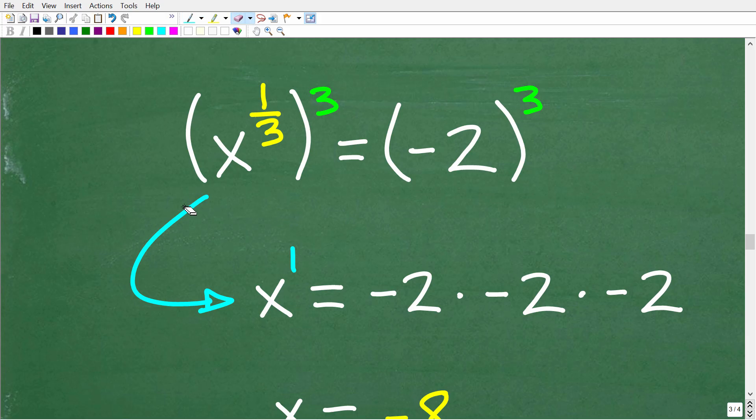Well, to do this, all we have to do is multiply a 3 by a 1 3rd, and you get a 1. So to solve for x, we need to raise this side of the equation by 3, or take x to the 1 3rd to the 3rd power.